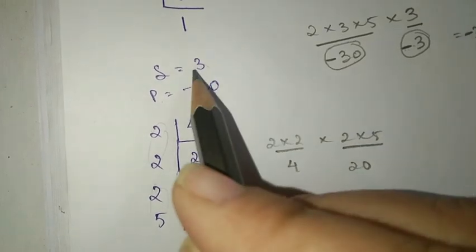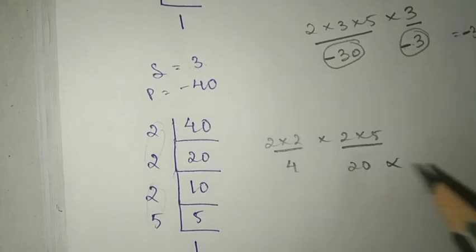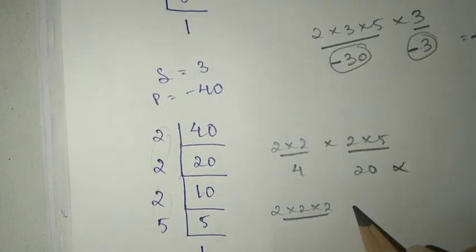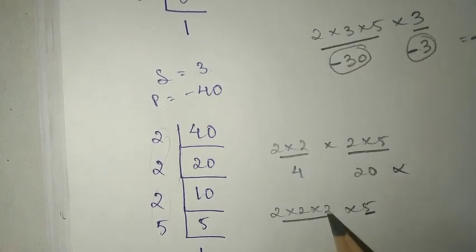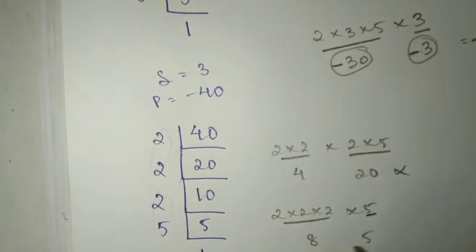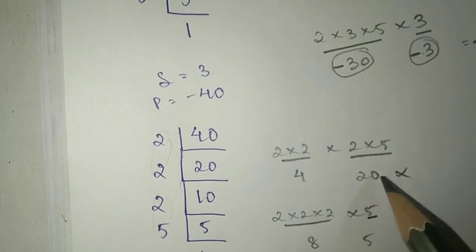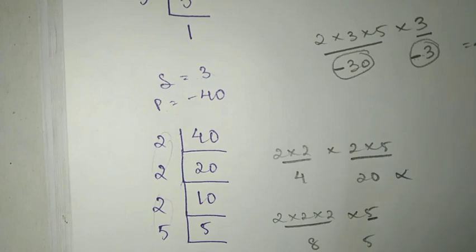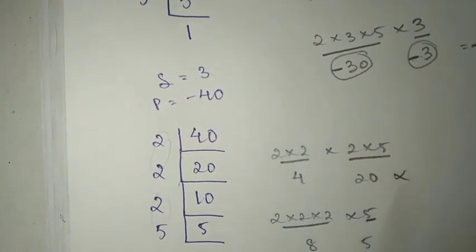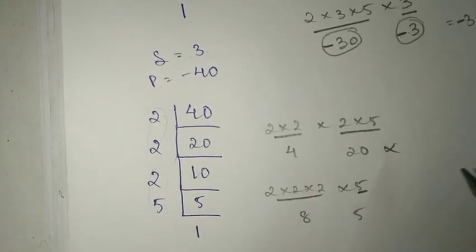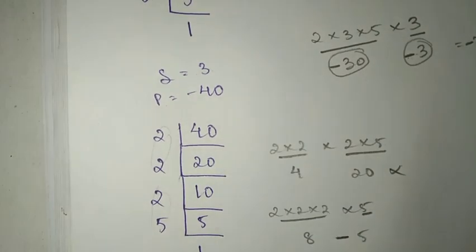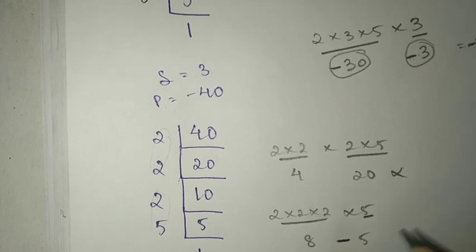Do you understand? 8 minus 5 gives us 3. So one number is positive 8, the other needs to be minus 5 to get the negative product. So the numbers will be 8 and minus 5.